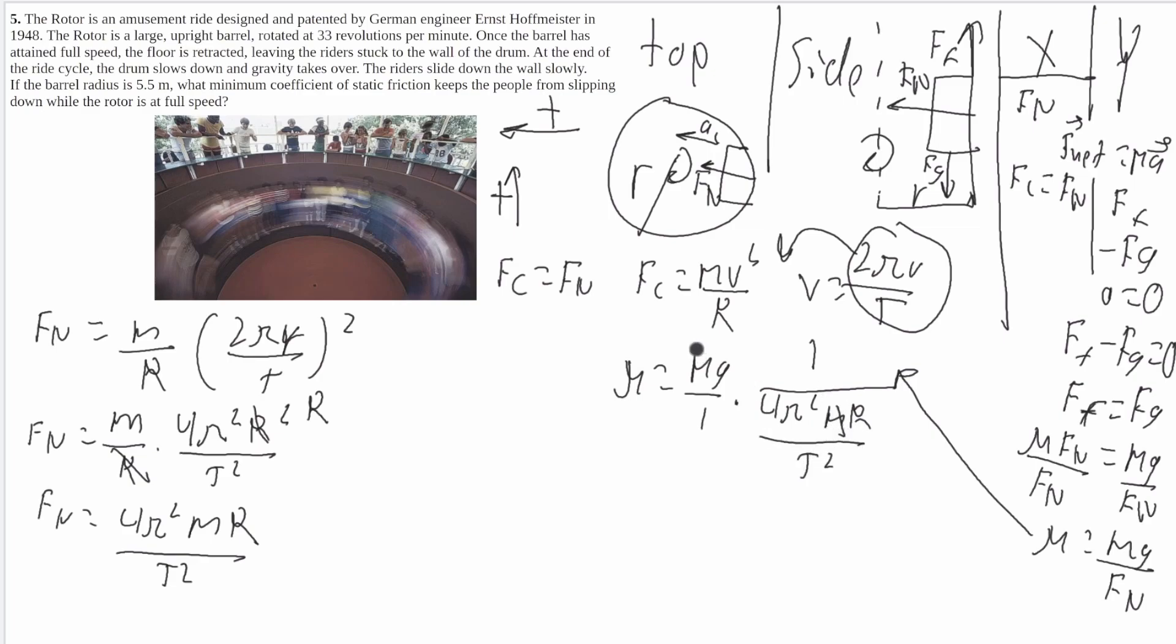Now this m's will end up cancel. So we'll be left with mu is equal to this t ends up going to the top, and then it'll be multiplied by gravity. So it'll be t squared g over 4 pi squared r. And that is your equation.